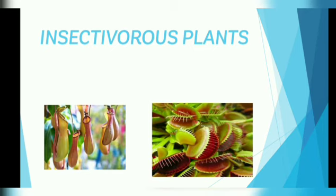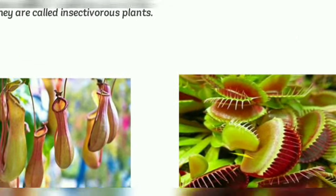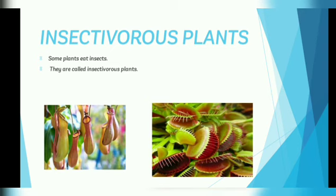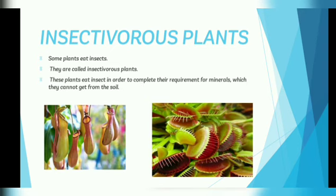The last category is insectivorous plants. There are some plants which eat insects. These are called insectivorous plants, like pitcher plant and Venus flytrap. These plants eat insects in order to complete their requirement for minerals which they cannot get from the soil.